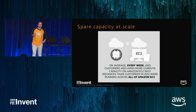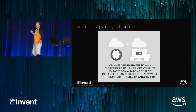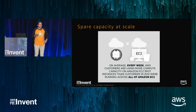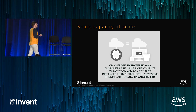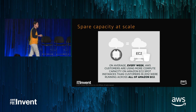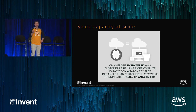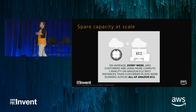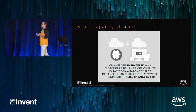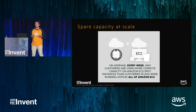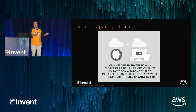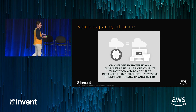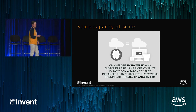Another way to think about our spare capacity is a statistic we released last year: on average, in every week, there was the same amount of Spot used as there was in all of EC2 in 2012. So the average week in 2016, there was more Spot consumed than the average week in 2012 for all of EC2. That's what's being used — there's a lot more still unused for you to capitalize on.